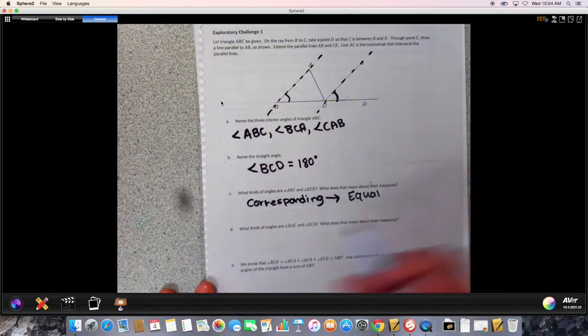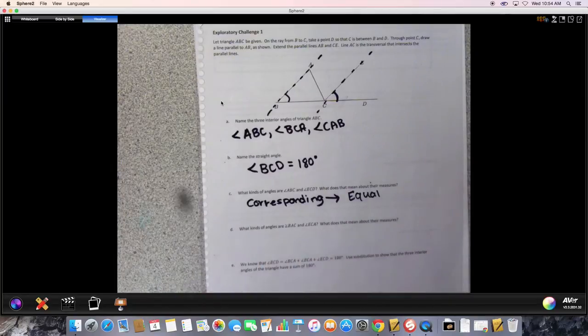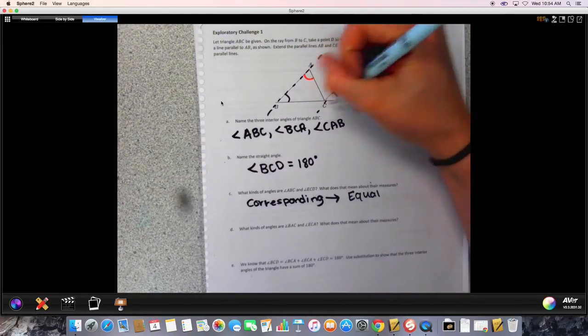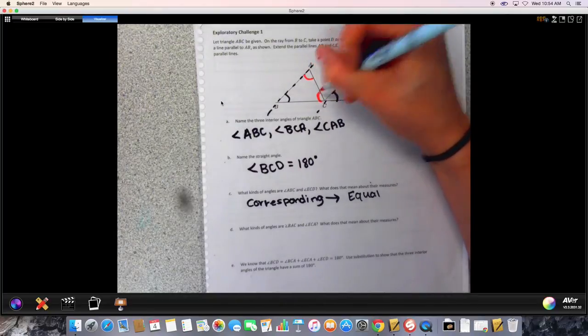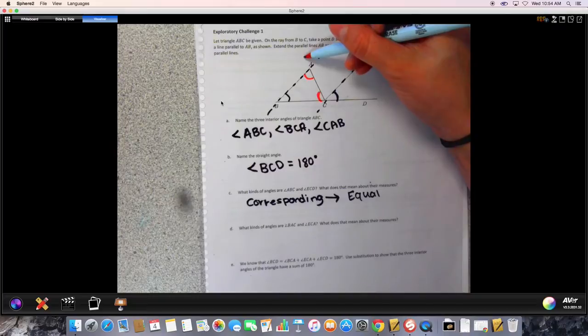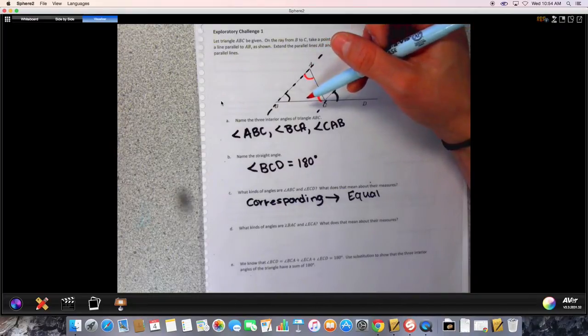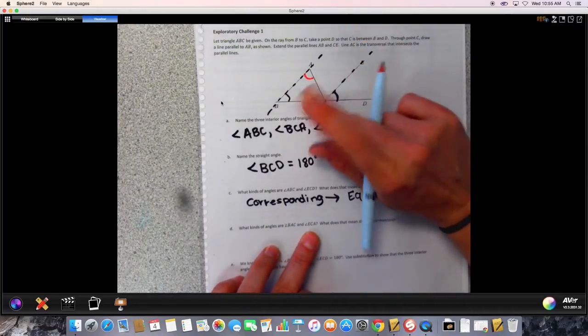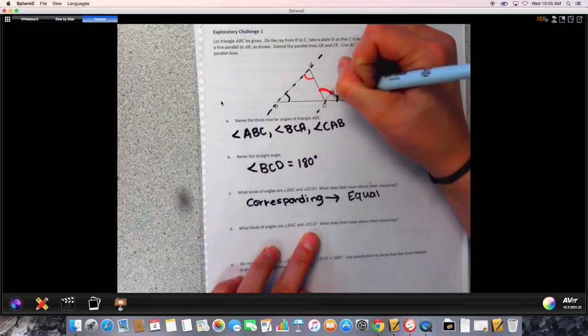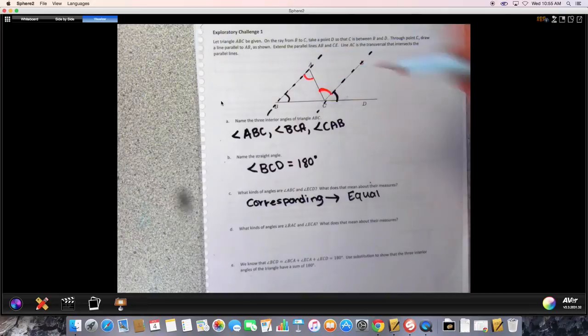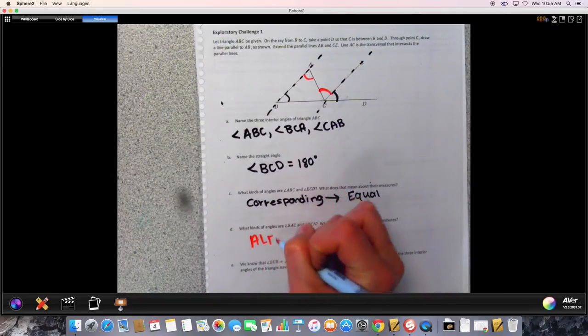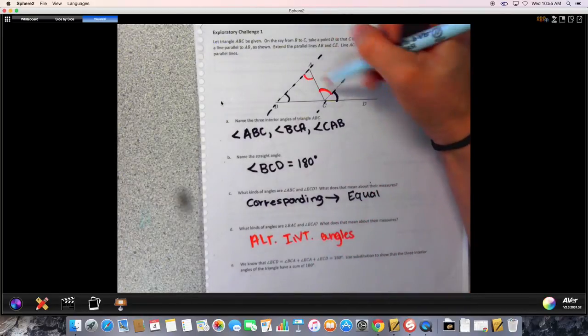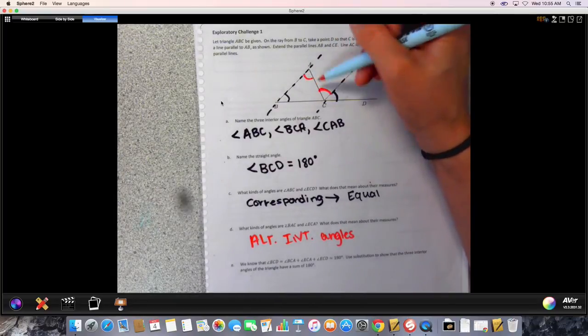Next, what kind of angles are BAC and ECA? BAC would be right here and ECA is right here. If we use this as a transversal, then these are called alternate interior angles because they're on opposite sides of a transversal and they're on the inside of our parallel lines here, and what that means is that these are also equal in measure.